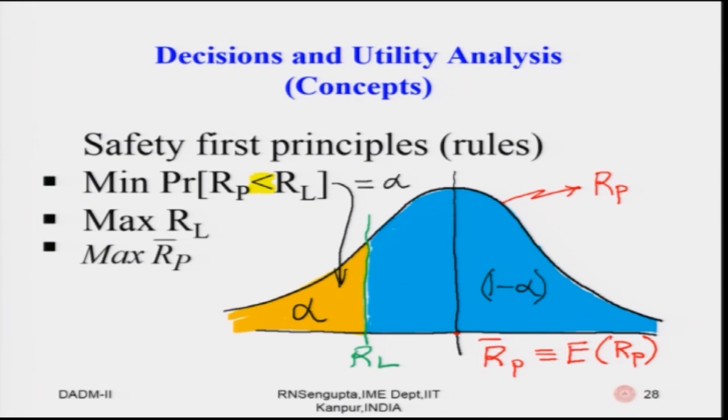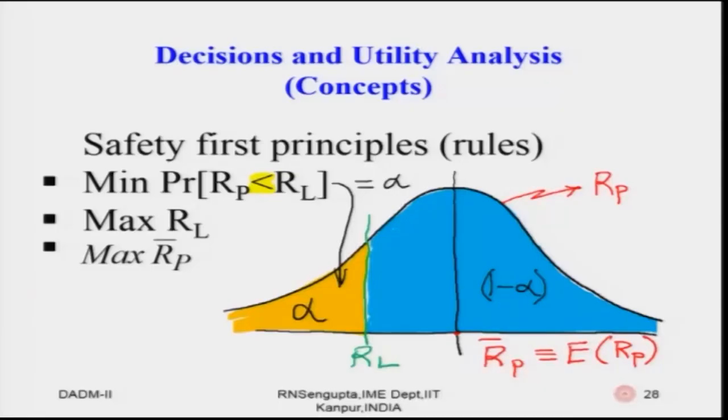For the second rule, maximizing Rl means pushing Rl to the right. Technically, this also causes the distribution to shift to the right, which maintains some relationship with the probability of Rp less than Rl. These rules do not run simultaneously — they are different rules based on which you take a safety first principle decision.